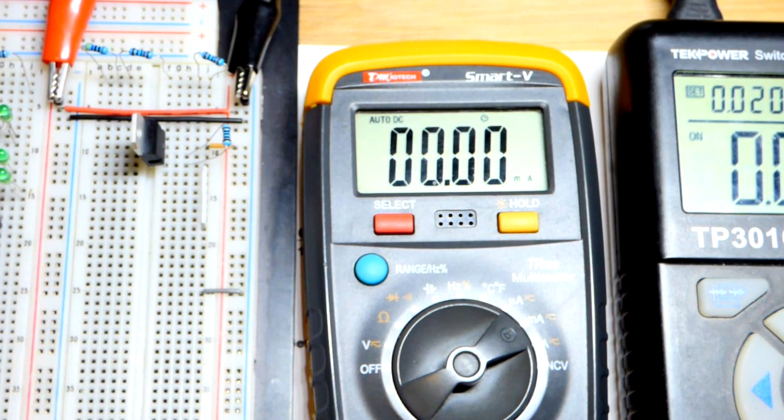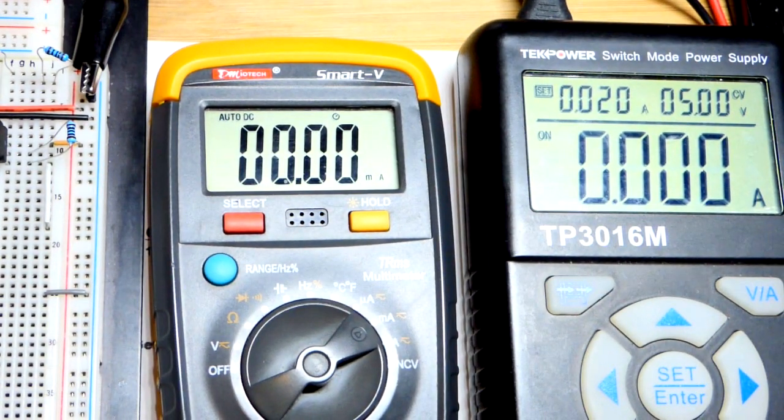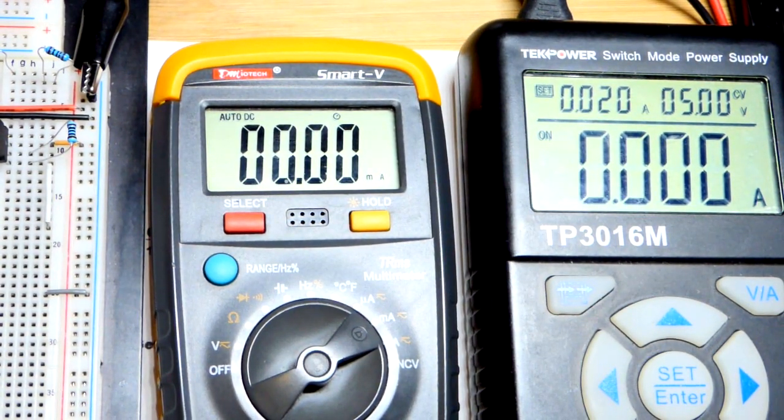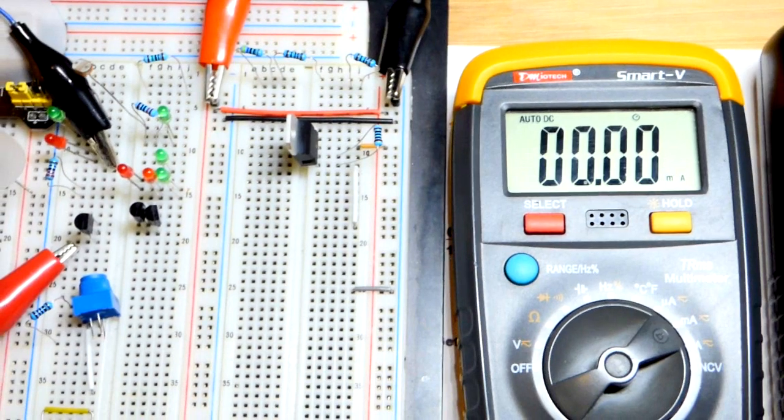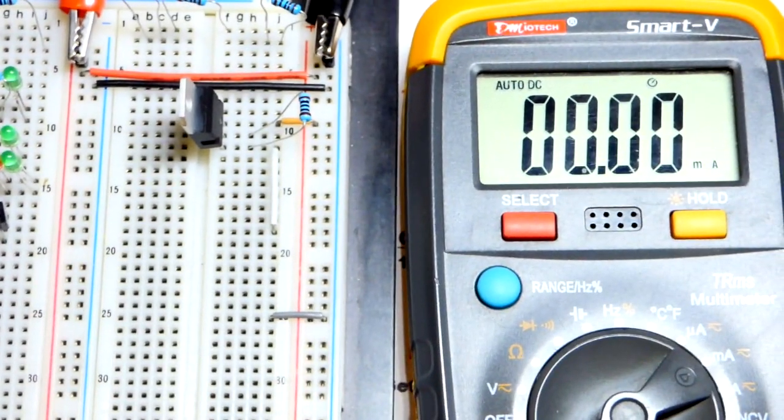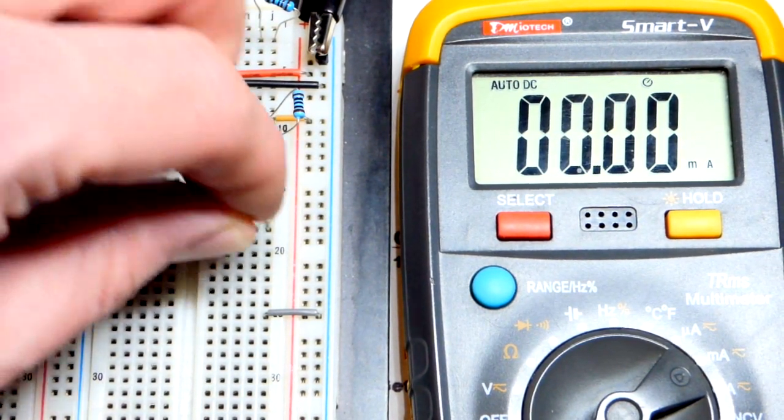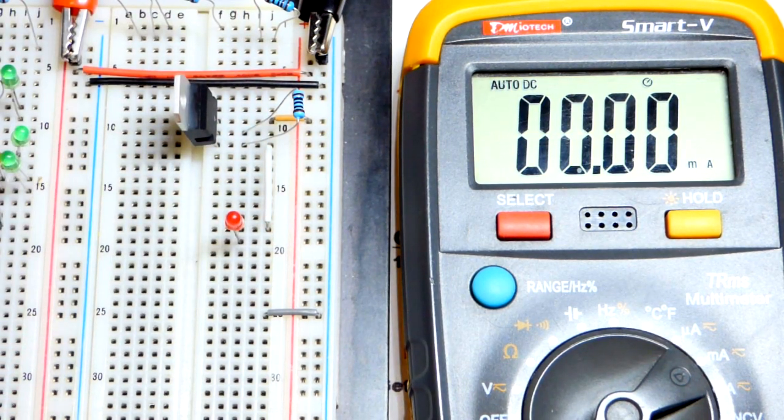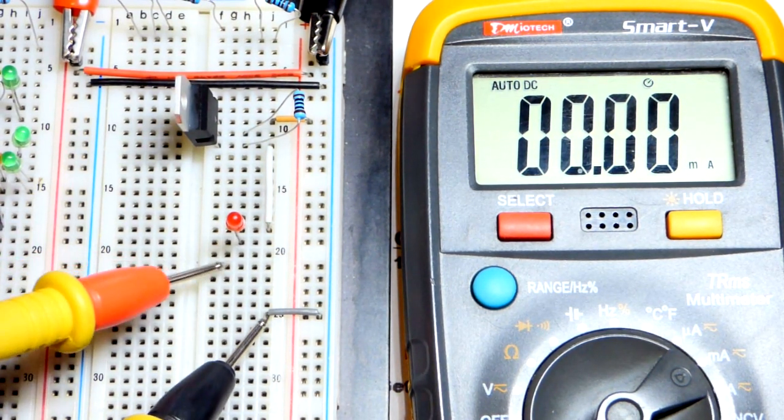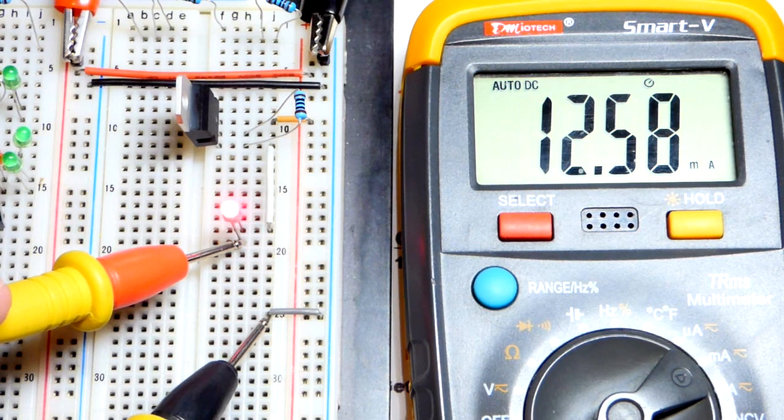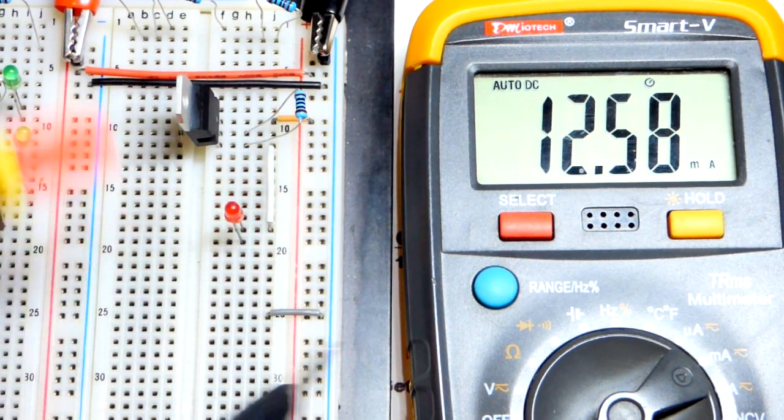So again, that was with 5 volts and no load. So what we're going to do is grab a red LED. Color does not matter. Although the green might block a little too much voltage. But there you can see we still have the same current.